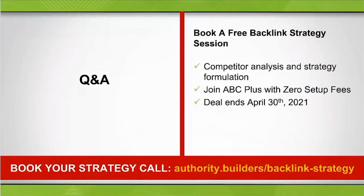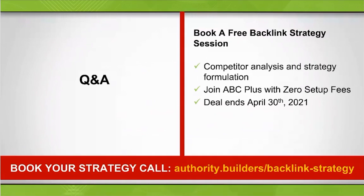We've made it to the end. Sign up for the free backlink strategy at authority.builders/backlink-strategy — we'll do the link gap analysis and the black sheep check for the first 50 people. If you want to sign up for ABC Plus with zero setup fees, that's on the same URL. Now let's do Q&A. Brandon asks: I have a client using Authority Builders, I was recommended not to build links to the homepage because of the black sheep effect. The client built a bunch of spam links via Fiverr and I disavowed over 200 links. If you disavow them, Brandon, they don't exist to Google anymore — you can build links now if they're truly disavowed and your URL is underneath the black sheep limit.